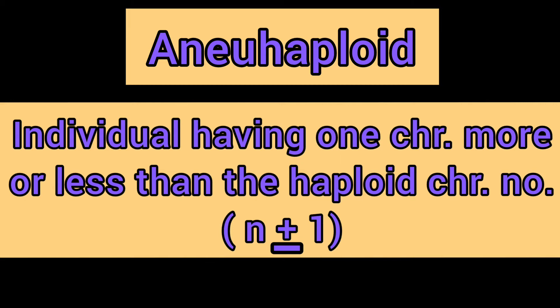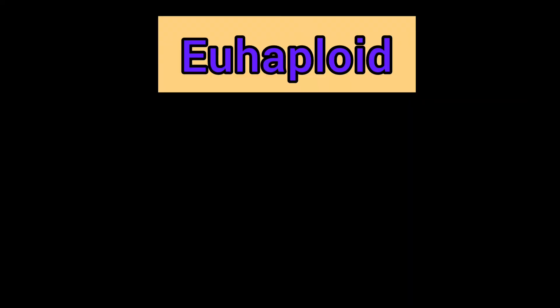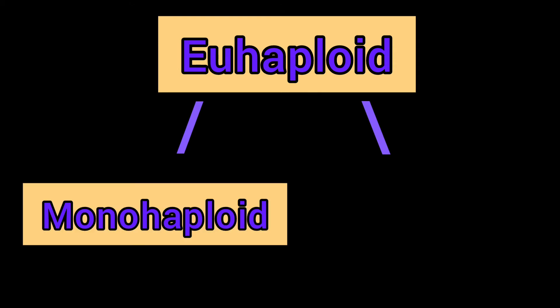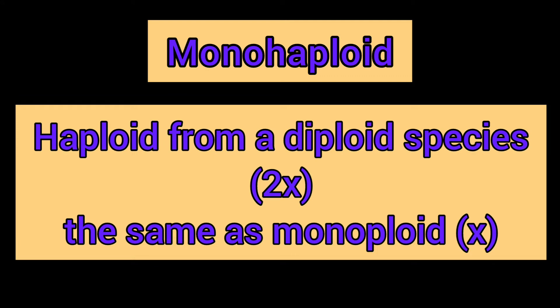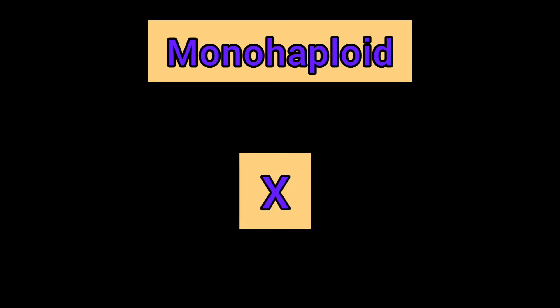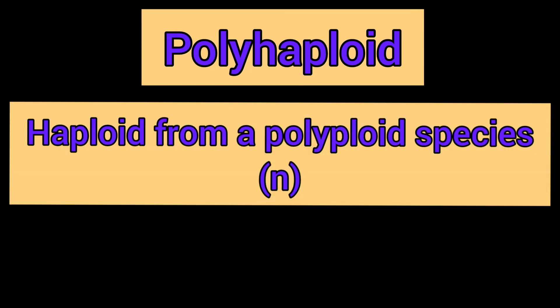In symbolic terms, aneuhaploid is represented as n plus or minus one. Euhaploids are further subdivided into two types: monohaploid and polyhaploid. A monohaploid is a haploid from a diploid species. Since a diploid species is 2x, monohaploids are represented as x. A polyhaploid is a haploid from a polyploid species, represented as n.